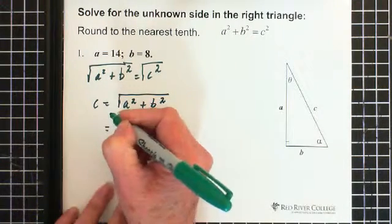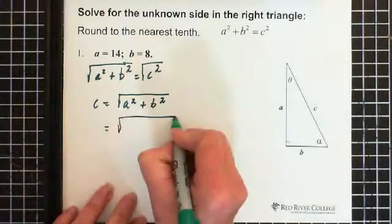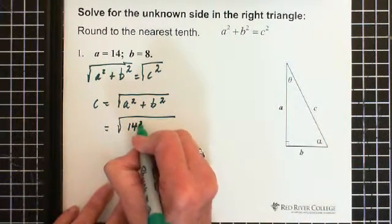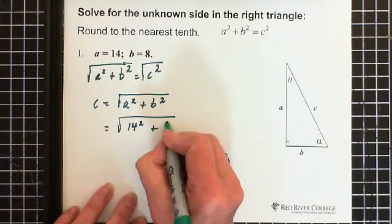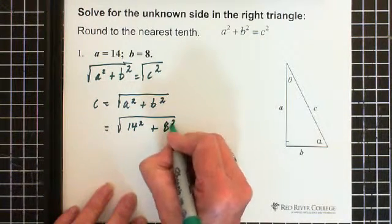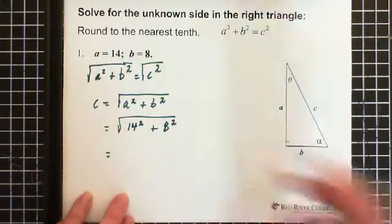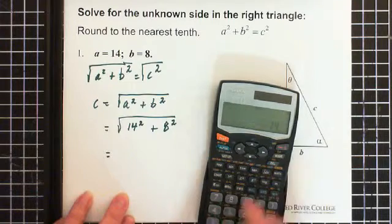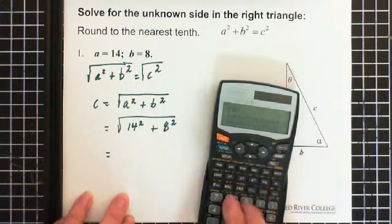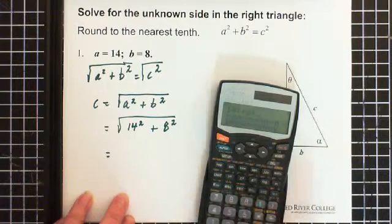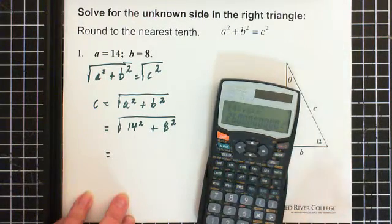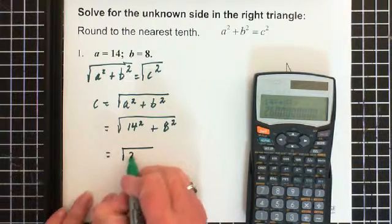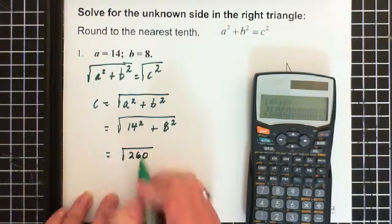Now we just plug in the numbers. We have the square root of a, which is 14 squared, plus b, which is 8 squared. So 14² + 8² equals 260. I'm going to write that down: 260, and that's still under the square root sign.